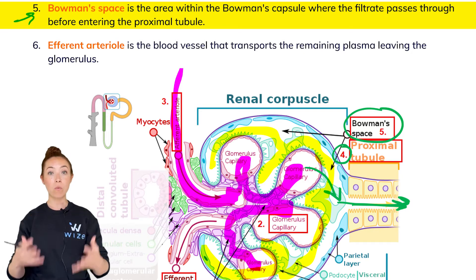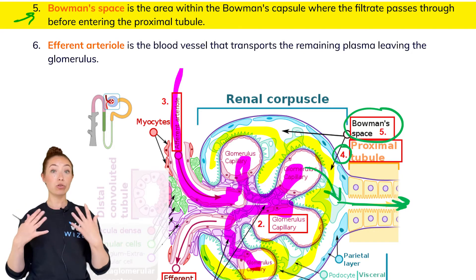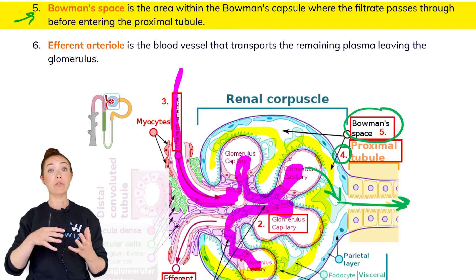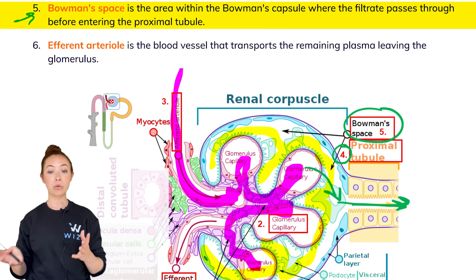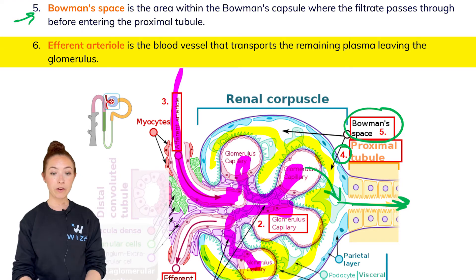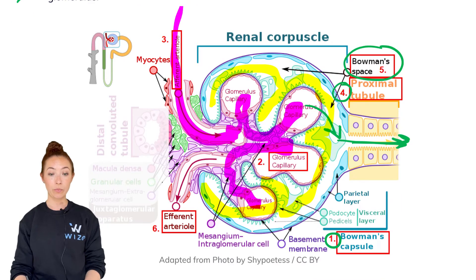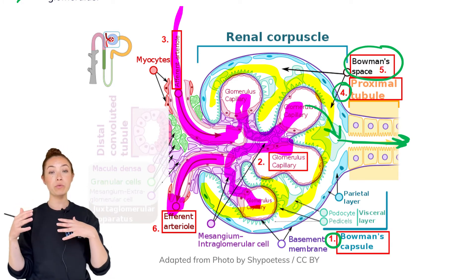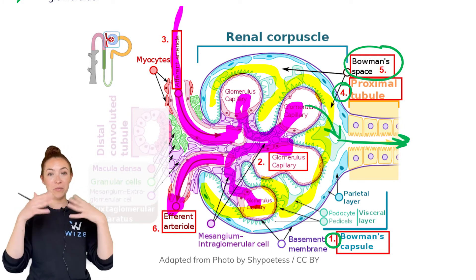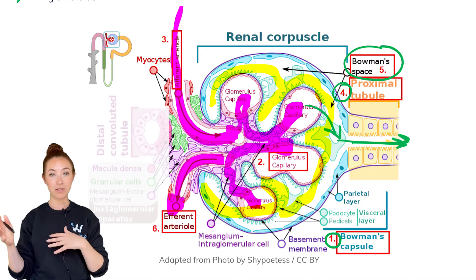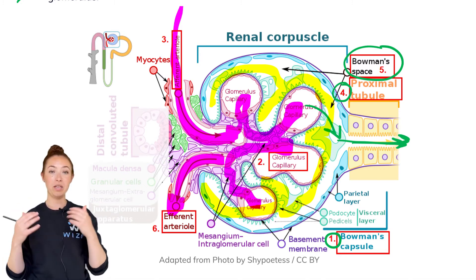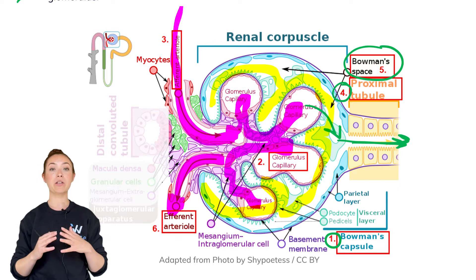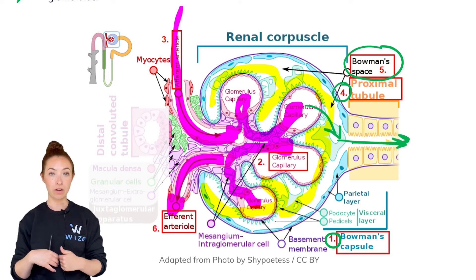Smaller things like water, electrolytes, and glucose are filtered into Bowman's space and become the filtrate. The efferent arteriole, seen right here, is the blood vessel that takes blood away from the glomerulus. After blood has gone through the glomerular capillaries and filtrate has come out, whatever is left over exits through the efferent arteriole. So: afferent goes toward the nephron, efferent comes out.